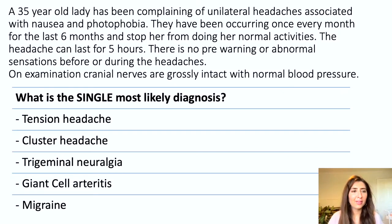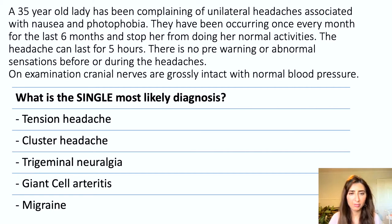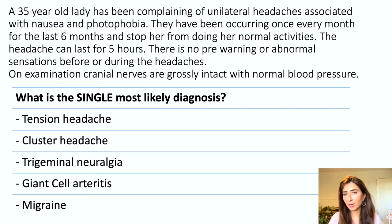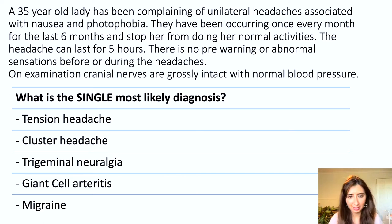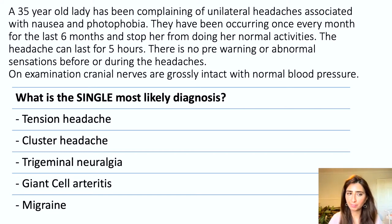We have a 35-year-old lady who's been complaining of unilateral headaches associated with nausea and photophobia. They've been occurring once every month for the last six months and stop her from doing her normal activities. The headache can last for five hours. There is no pre-warning or abnormal sensations before or during the headaches. On examination, cranial nerves are grossly intact with normal blood pressure. What is the single most likely diagnosis?